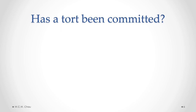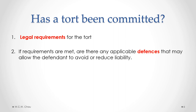To determine whether a tort has been committed, we first need to see what the legal requirements are for that specific kind of tort. Every type of tort has a specific list of requirements, set by courts through case law, that must be met. If the requirements are met, we then need to look at the applicable defenses that may allow the defendant to avoid or reduce liability. For example, for the tort of defamation, the defenses include justification, absolute privilege, qualified privilege, and fair comment.